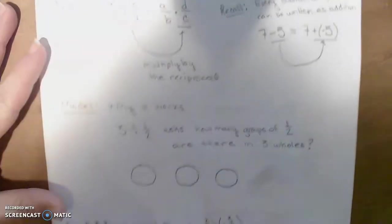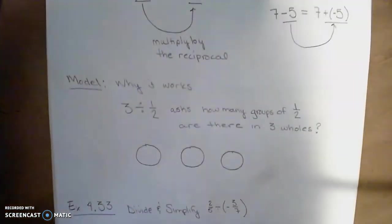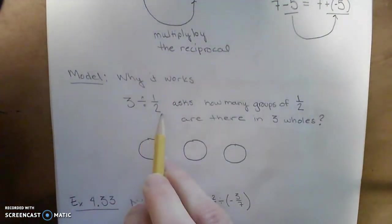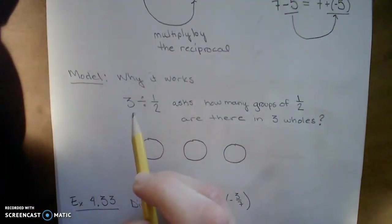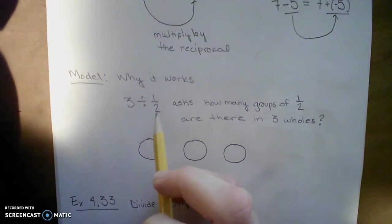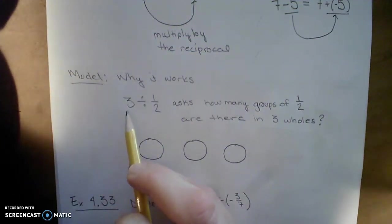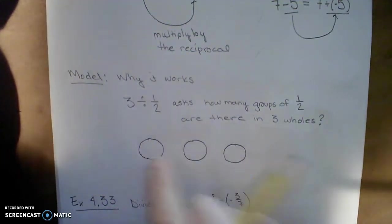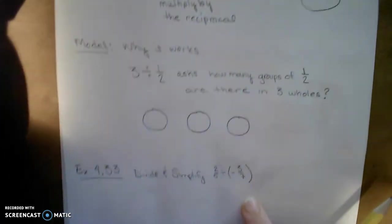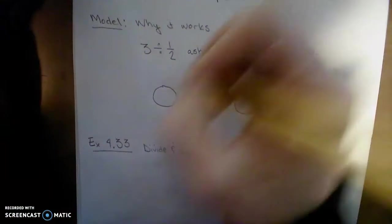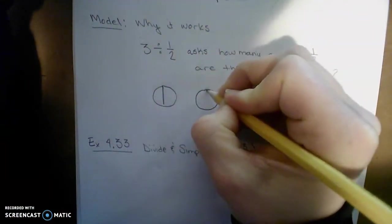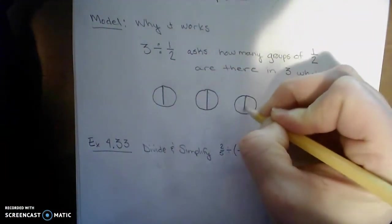So let me tell you why that works. Let's look at an example, 3 divided by 1 half. Every division problem like this asks, how many groups of 1 half are there in 3 holes? So here are my 3 holes. And to see how many groups of 1 half there are, I'll actually have to draw in the halves. So I'll take those 3 and chop them in half.